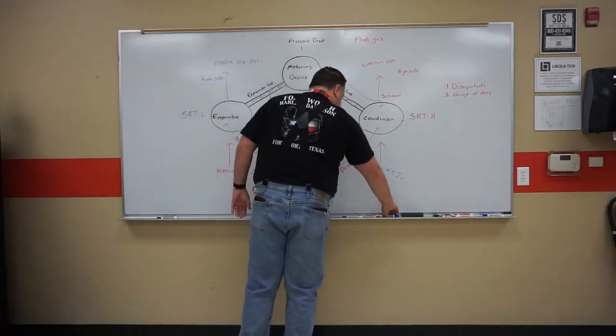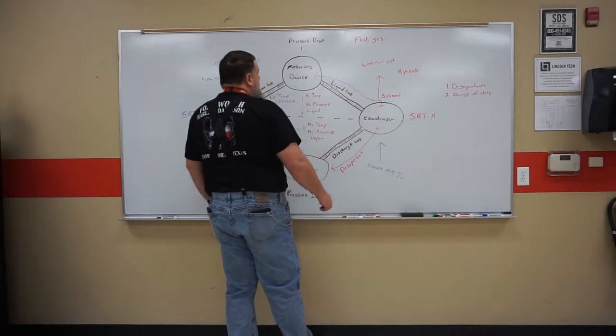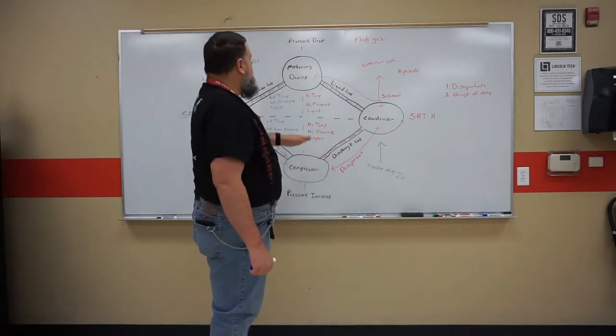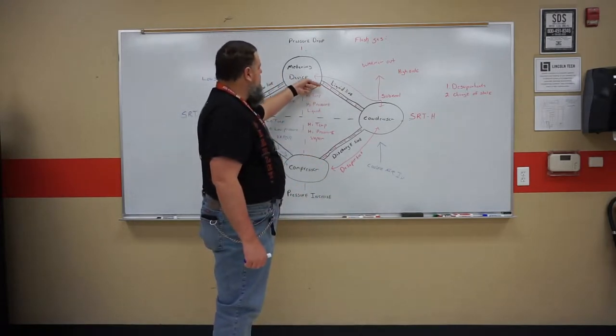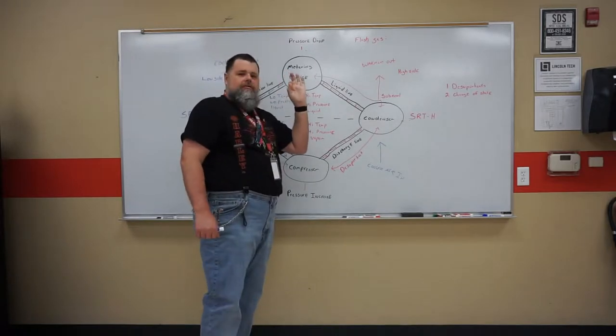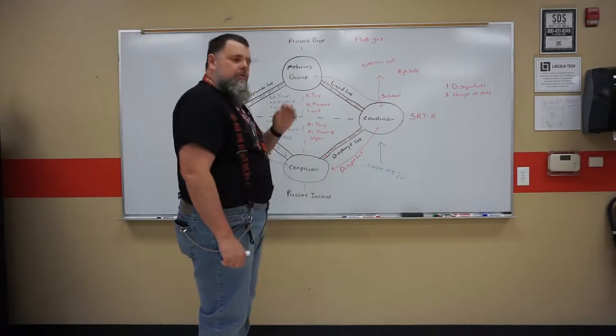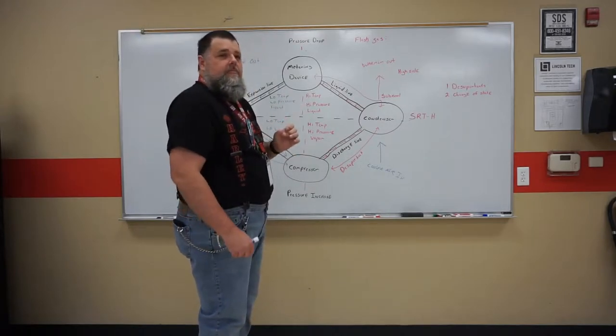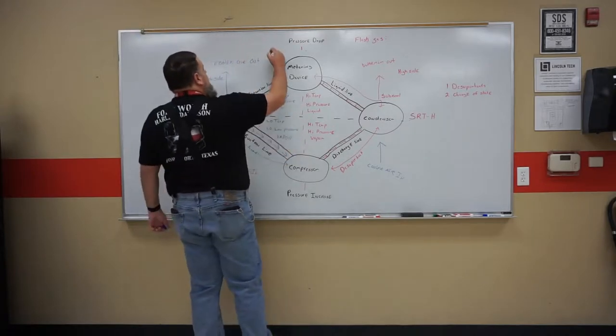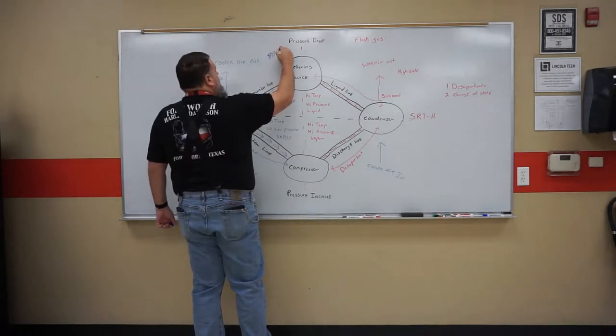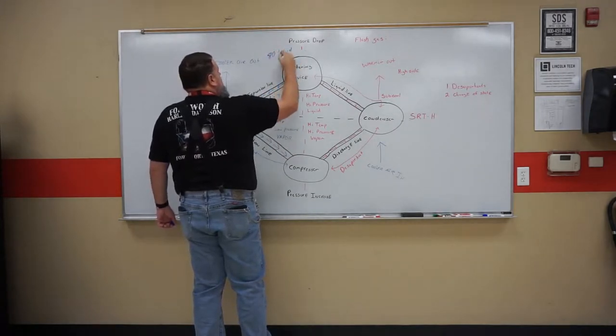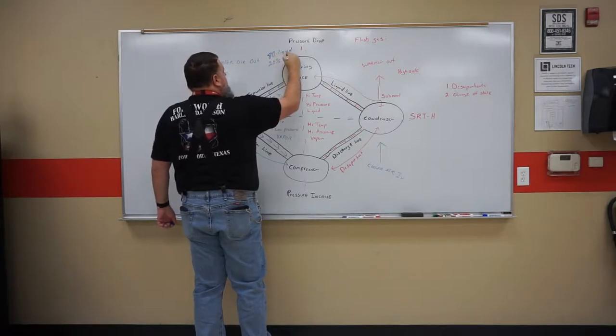So when we get over here to the metering device, we're going to have a pressure drop. So basically this goes into a large line and then it goes through a tiny little orifice in there, and that's what causes the pressure drop. As we do that, we will flash some, but we should have at least 80% liquid and 20% vapor as we flash through there.